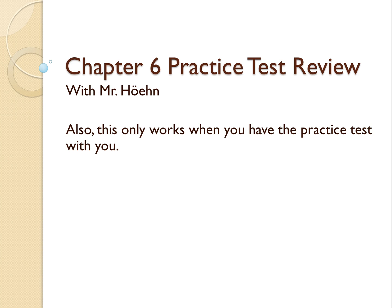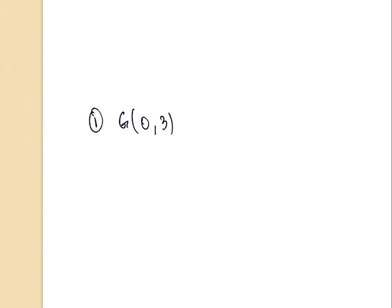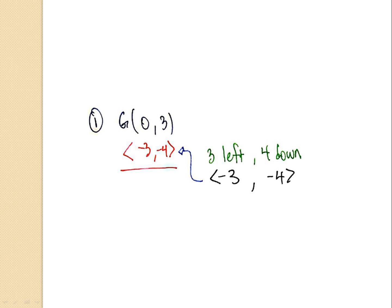Hopefully all the tests are out — remember this only works if you have the practice test in front of you. Number one talks about point G. Point G is in the graph at the top of the practice test, and that coordinate point is zero comma three. All that one asks you to do is translate that three left and four down. If I go three left and four down, I make that into a vector: negative three because it's going left, and negative four because it's going down. I apply that to my original point and I have zero minus three and three minus negative four.